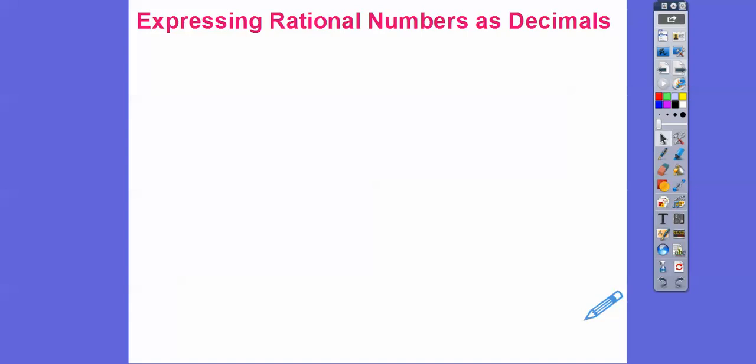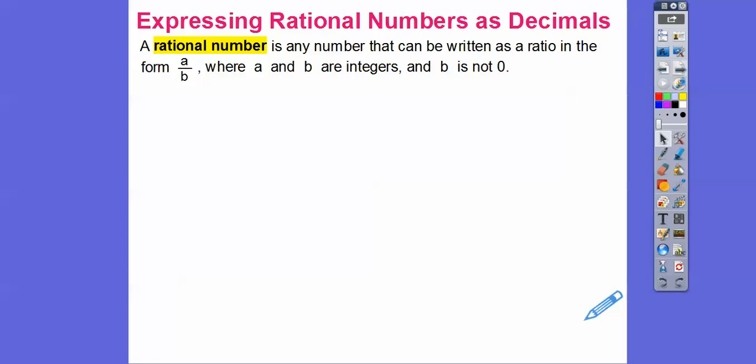Expressing rational numbers as decimals. A rational number is any number that can be written as a ratio, written as a ratio. Ratio is just a fraction. A over B, where A and B are both integers like 5 or negative 2 or negative 7 or 11, and the only integer we have to exclude is 0 in the bottom. We can't have 0 because we can't divide by 0.